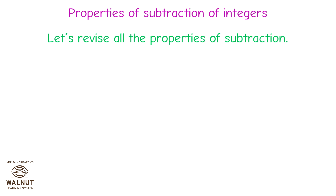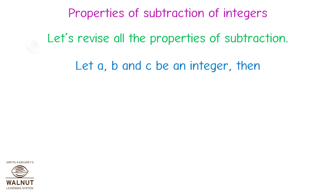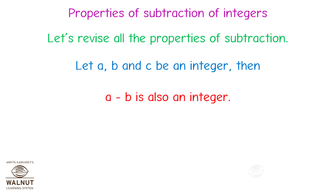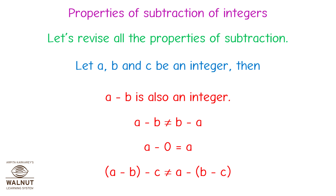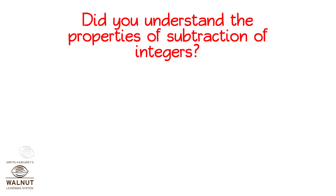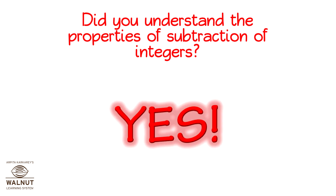Properties of subtraction of integers. Let's revise all the properties of subtraction. Let a, b, and c be integers. Then: a minus b is also an integer. a minus b is not equal to b minus a. a minus zero is equal to a. (a minus b) minus c is not equal to a minus (b minus c). Did you understand the properties of subtraction of integers? Yes.